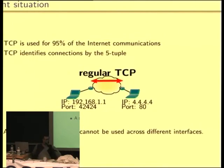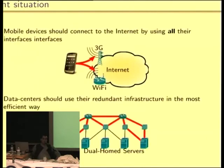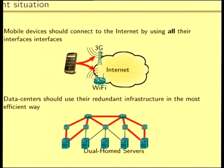That's the reason why you cannot use your mobile phone as you wanted, meaning using Wi-Fi and 3G at the same time. If you could use Wi-Fi and 3G at the same time, you would have a higher bandwidth, and potentially you could benefit from failover — meaning when your data stream is going over Wi-Fi and you lose your Wi-Fi connection, you could switch over to 3G, which is not possible with TCP nowadays.